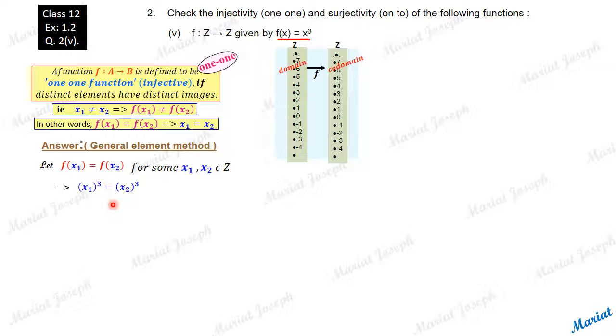Now, don't be casual in taking off this cube sign and writing it as x₁ equal to x₂, which may not be true. The way you should simplify it further is x₁³ minus x₂³ equals 0. Now this is a cubic equation. Factorize this expression using the identity: a³ minus b³ equals (a minus b) times (a² plus b² plus ab). By using that identity, we get these factors: (x₁ minus x₂) times (x₁² plus x₂² plus x₁x₂) equals 0.